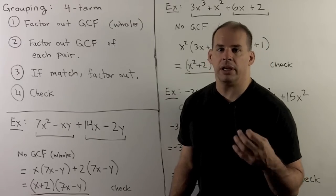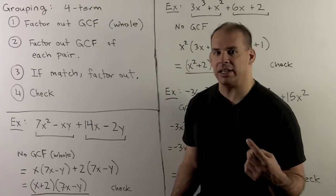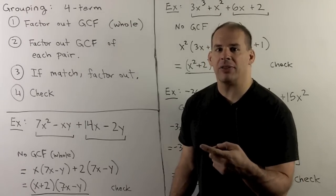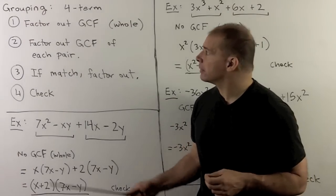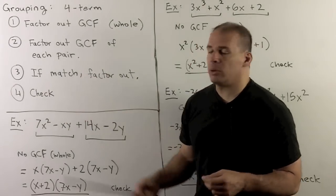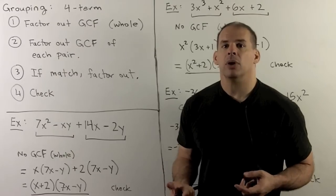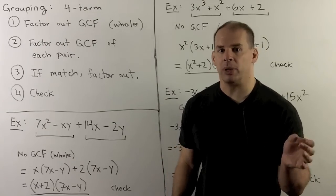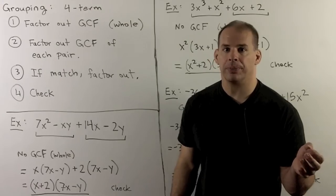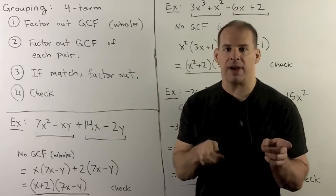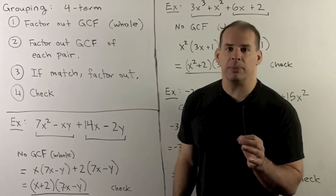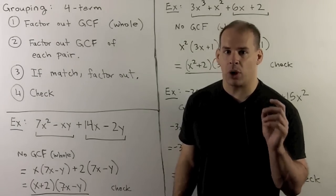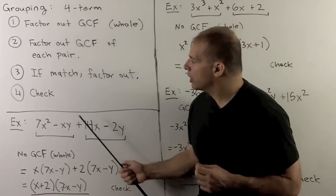We move on to grouping, which applies to polynomials with 4 terms. As a technique, grouping is hit or miss — it may or may not apply. But for the next section, it will be a key step in our factoring method. The checklist: first factor out the GCF, then put the 4 terms in pairs and factor the GCF out of each pair. If what remains matches, grouping works and we factor. If you try all pairings and get no match, grouping doesn't apply. Always check the answer by multiplying.